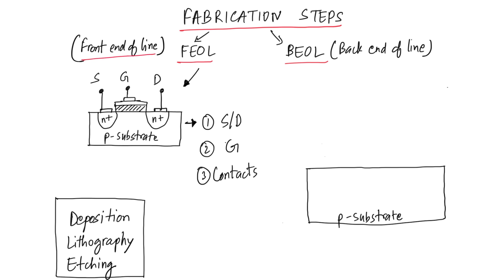FEOL is the front end of line, which basically involves the fabrication of the bottom most layers of our chip, which is the cells or the devices. Whereas, BEOL involves the fabrication of all the vias and metal layers, which connect all these devices to each other.